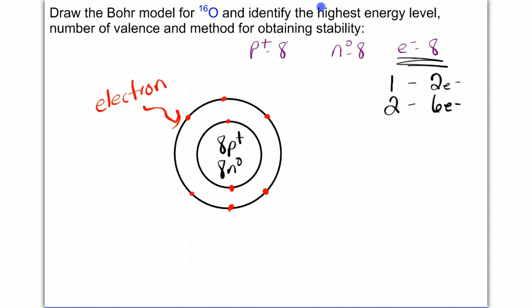So this Bohr model has a total of 6 valence electrons. Now, how would this atom obtain stability? Remember, the goal is to have an octet, 8 valence electrons. So in this case, if it were to gain 2 electrons, it could gain those 2 electrons, which would give it a negative 2 charge.